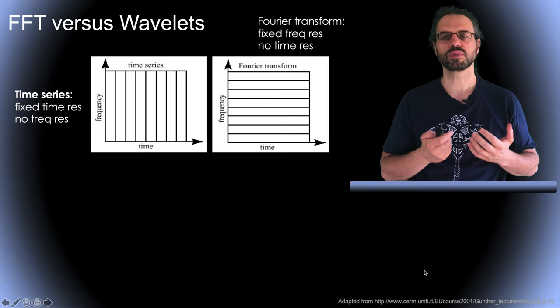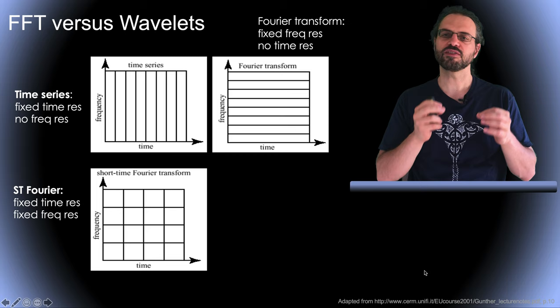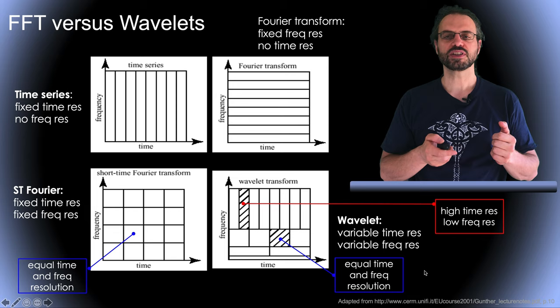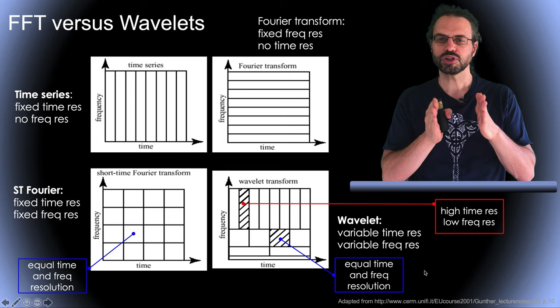Now, this is a short time Fourier transform where we segment time in different windows. Now we can have both fixed time and frequency resolution in each window. And finally, this is a wavelet transform where we can adapt the width of the wavelet, its time resolution, to the frequency of interest. So it produces better time-frequency resolution trade-off.